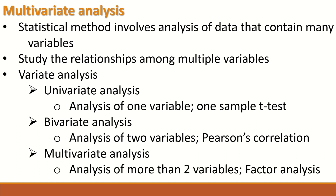Multivariate analysis is the analysis of data that consists of more than two variables when there are multiple groups. Examples of statistical methods include factor analysis, principal component analysis, ANOVA, MANOVA, Kruskal-Wallis test, and Friedman's test — all statistical tests designed for analyzing data consisting of more than two groups: three, four, and so on.